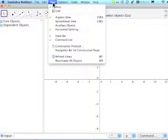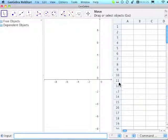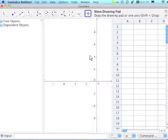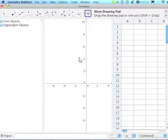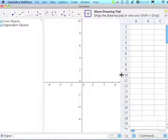So the first thing we're going to do is go to View and open up the spreadsheet view. I'm going to go to the Move Drawing Pad tool to give myself a little bit of space.